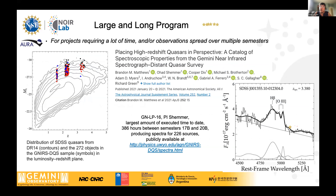For Large and Long Programs, the example I chose was LP-16, which so far is the program with the largest amount of time — they got almost 400 hours over three and a half years. They have published near-infrared spectra for more than 200 quasars, and the data are available at this link. So Large and Long Programs are for projects that require time over multiple semesters.